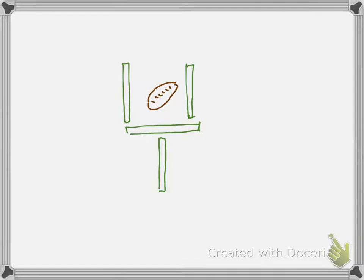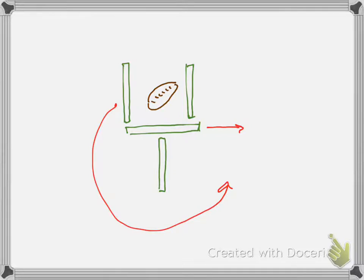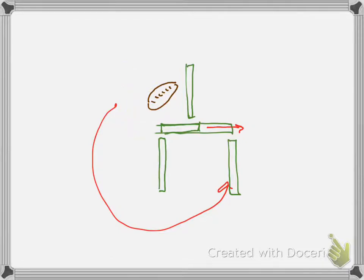The answer is quite straightforward once you see it. You take one matchstick and move it over half a matchstick's length, then take the other matchstick and put it down below. The result is a goal post without the football inside — the football stays in the same place. Ta-da.